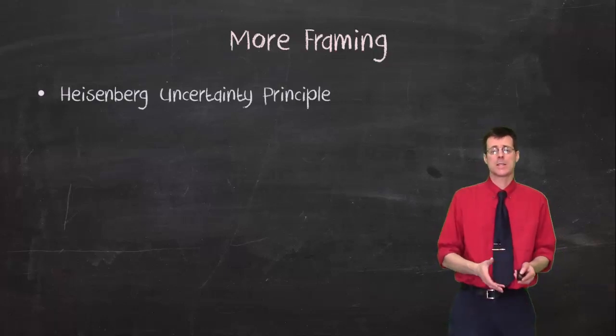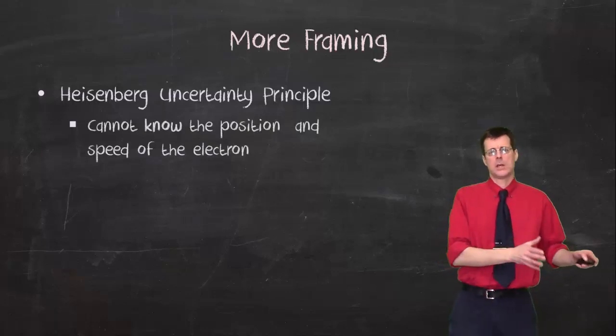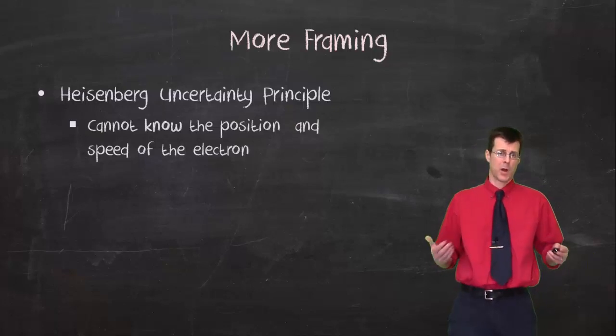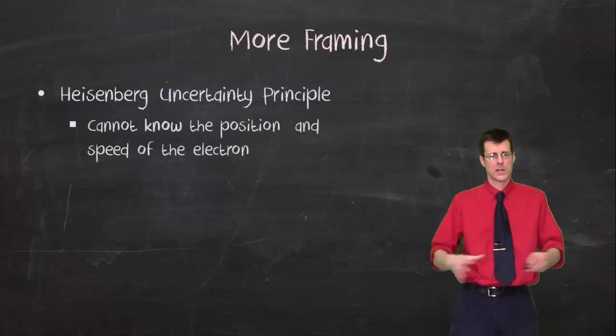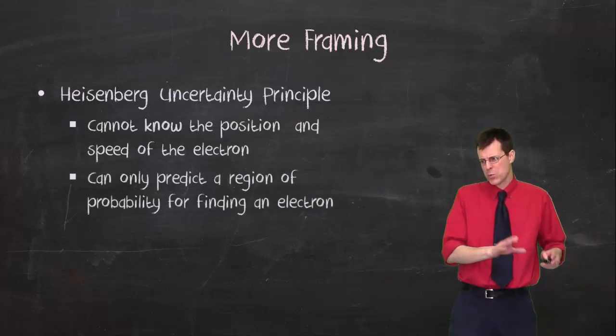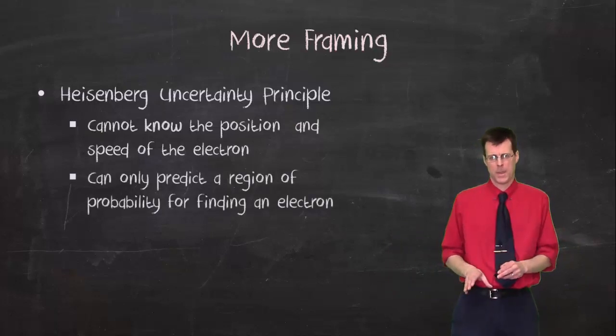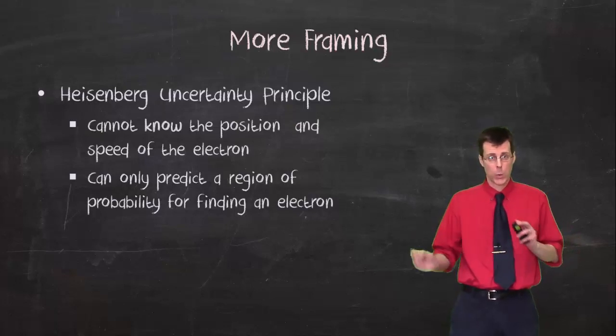Some other things that are involved, something called Heisenberg Uncertainty Principle. Now Heisenberg Uncertainty Principle basically says that we cannot figure out the exact position and speed and momentum of the electron, partly because whatever we do to find it, we're going to change it. So the electron, we don't know where it is. We can figure out where it's probably going to be, but we can't figure out where it is.